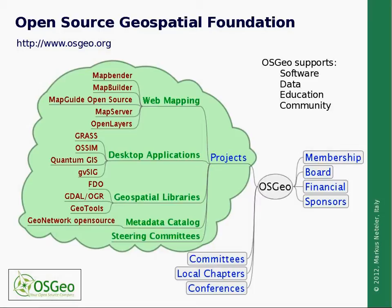But OSGEO is not only about software; it is also about public geodata, about education and community development. OSGEO itself is controlled by the charter members who elect a board of directors. There is financial support from different sponsors, especially from industry. To acknowledge that users want to speak their native language, a series of local chapters have been founded. And each year, there are a series of conferences in different countries.